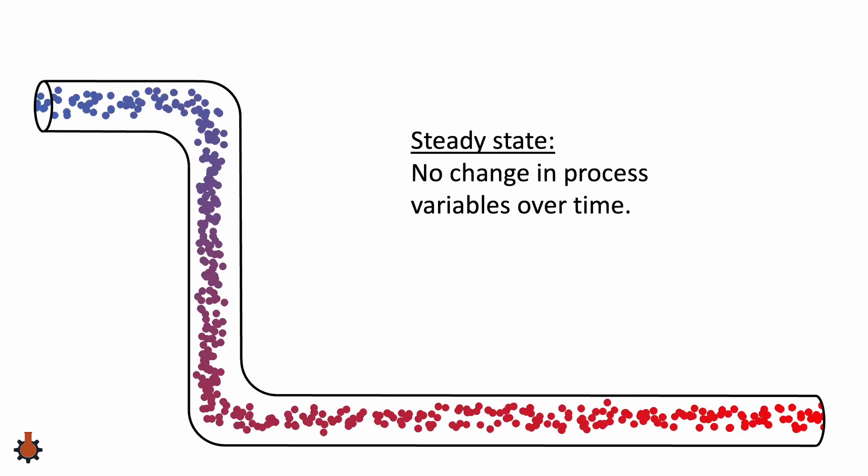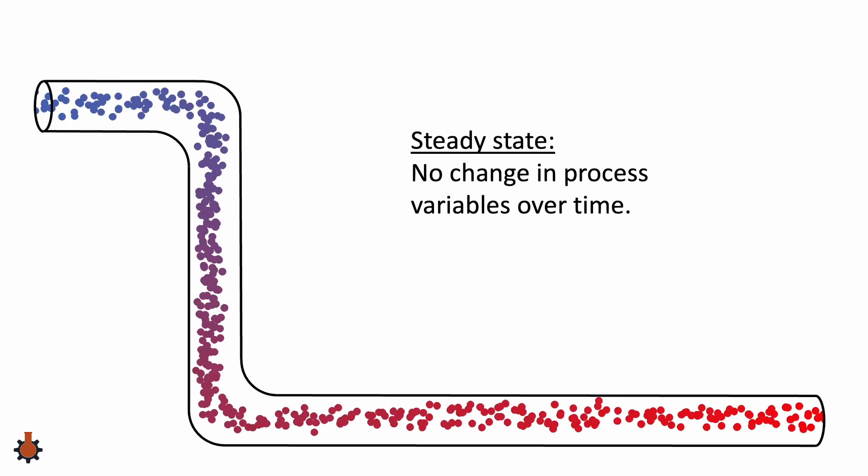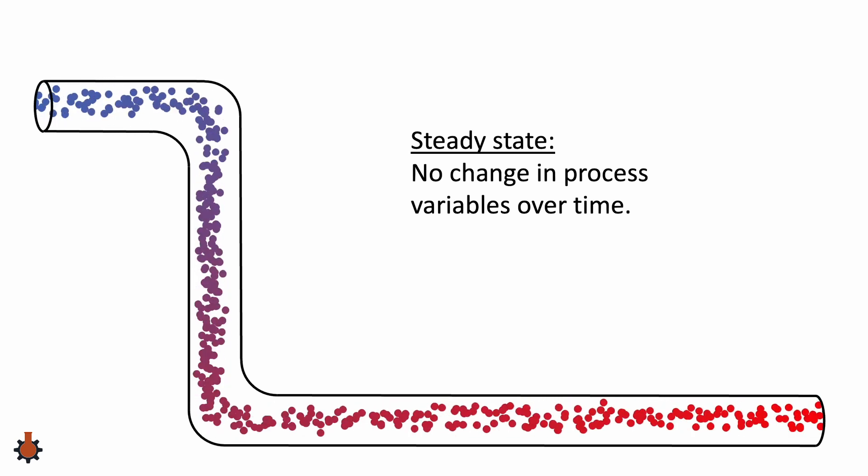A specific point highlighted here has the same color. As the dots move through, we can see that they do not change. And we can do this for a second point, or a third point. For each specific point, and any other we choose, there is no change of the process variables over time, and therefore the system is at steady state.